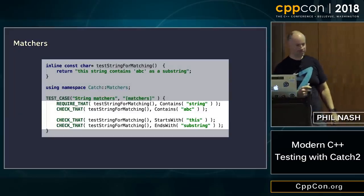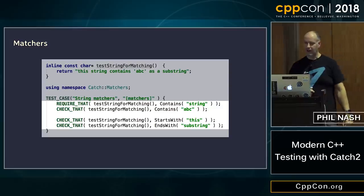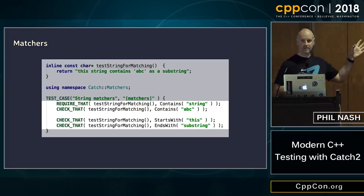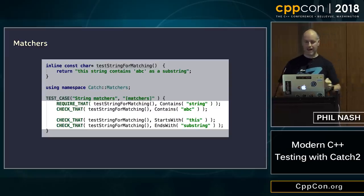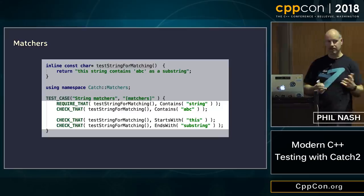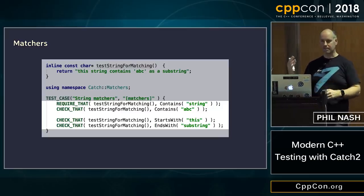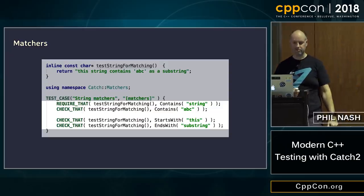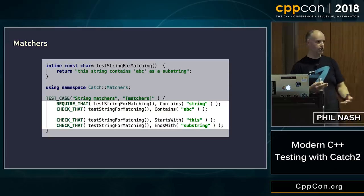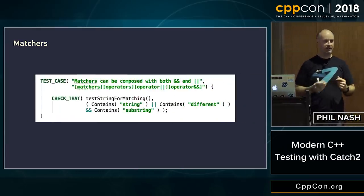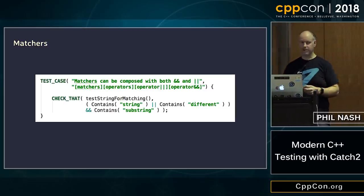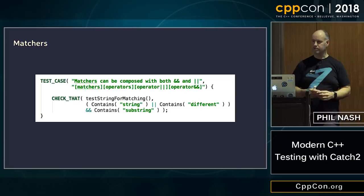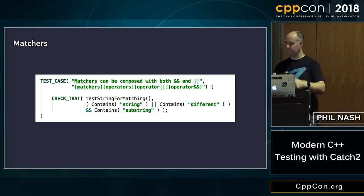Now let's talk about matchers. If you've used matchers in other languages, it should all be familiar. We have an alternative set of macros — REQUIRE_THAT and CHECK_THAT. The first argument is the value you want to test, and the second is the matcher. For string matchers, you can check whether a string contains a substring, starts with a substring, or ends with one. It gets even more powerful when you compose them together using logical composition operators AND, OR, and NOT. You can use brackets for precedence — it's a very rich compositional approach.